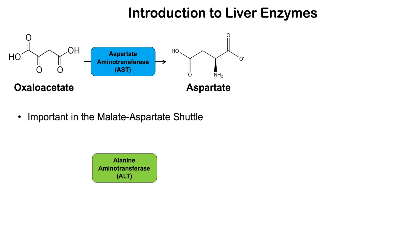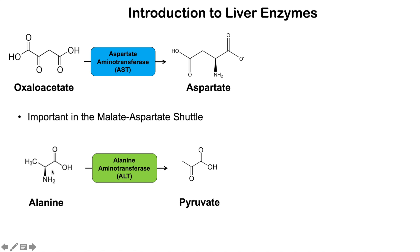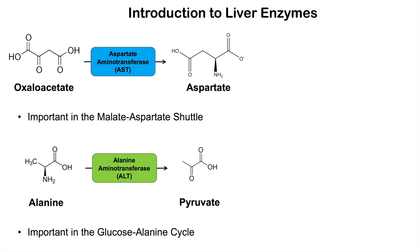With regards to alanine aminotransferase, it takes alanine and can either remove the amino group from alanine to make pyruvate, or add the amino group to pyruvate to make alanine. It can go in both directions and is important in the glucose-alanine cycle.